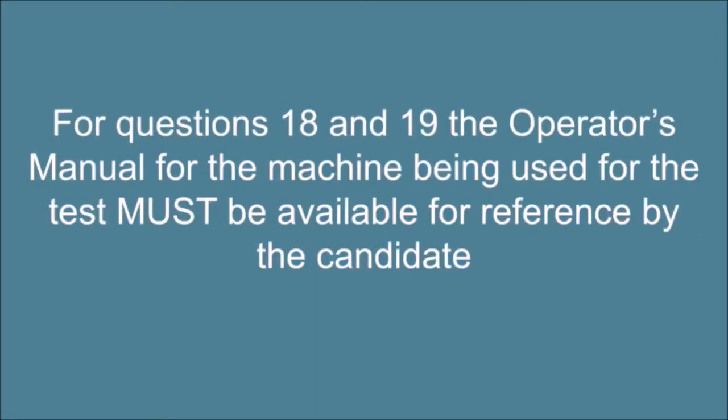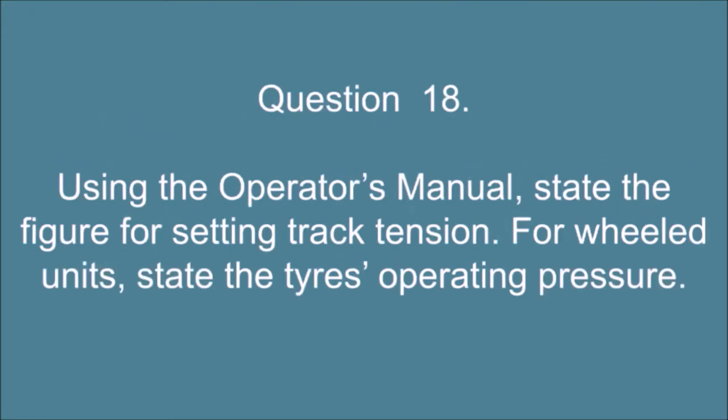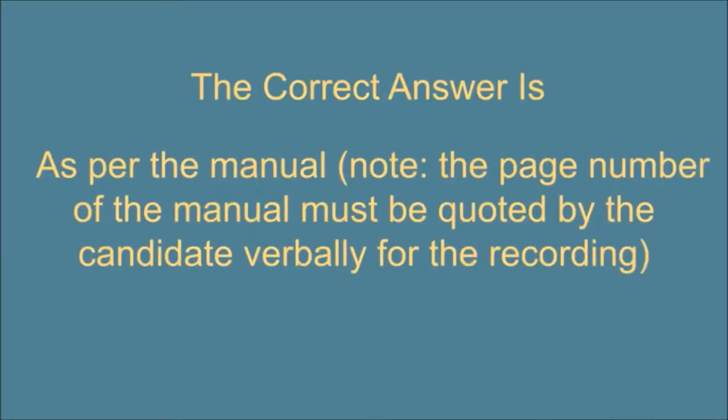For questions 18 and 19, the operator's manual for the machine being used for the test must be available for reference by the candidate. Question 18. Using the operator's manual, state the figure for setting track tension, four-wheeled units, state the tire's operating pressure. The correct answer is, as per the manual. Note, the page number of the manual must be quoted by the candidate verbally for the recording.